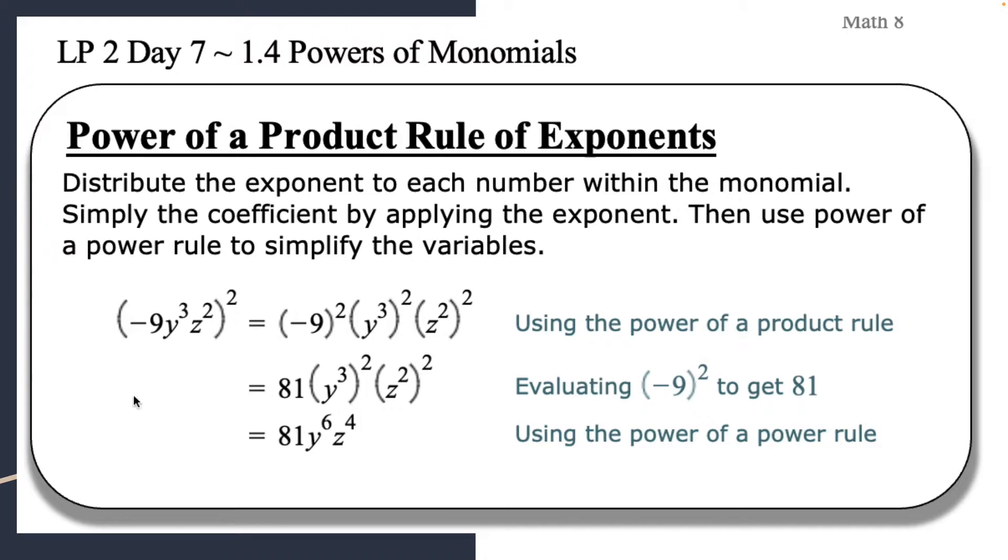So we can see that happening in this first one. So we have negative 9, y to the third, z squared, and then we have this exponent of 2 on the outside of the parentheses. So the first thing that they do on this is they literally give this exponent of 2 to each one of the terms, to each one of the pieces. So negative 9 squared, y to the third squared, and z squared squared.